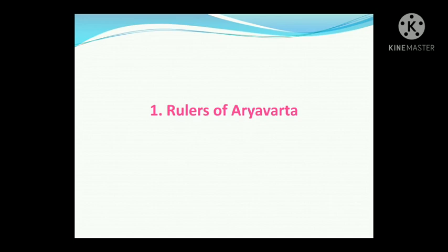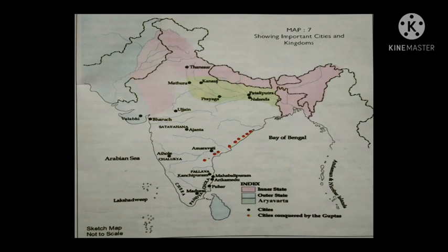The first one is the rulers of Aryavarta. Children, in this map you can see the area shown in green color — that is the area which was under Aryavarta. Here, nine rulers were defeated by Samudragupta. As a result, their kingdoms were made a part of Samudragupta's empire.